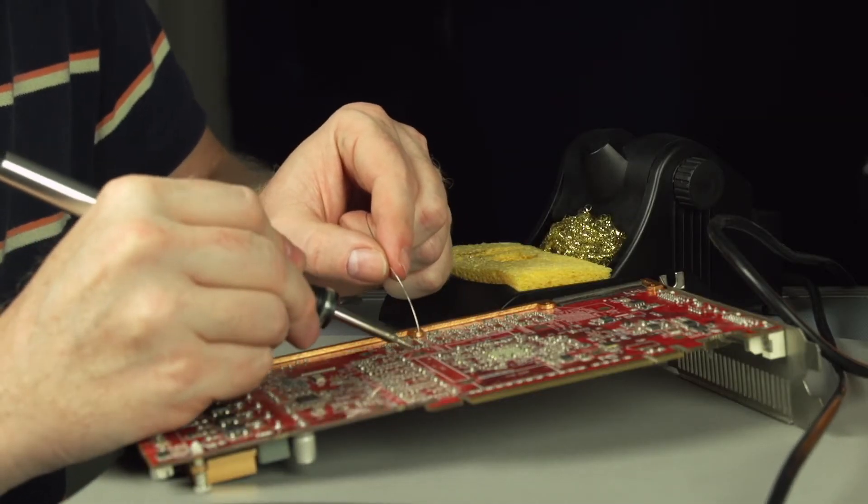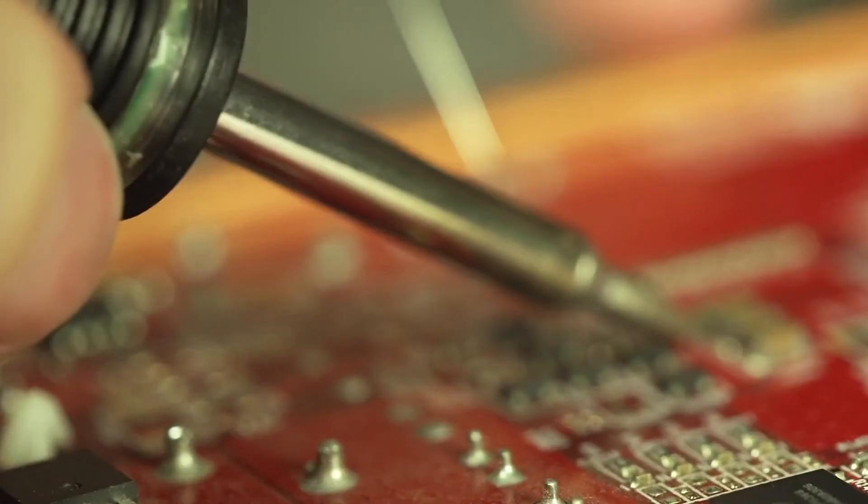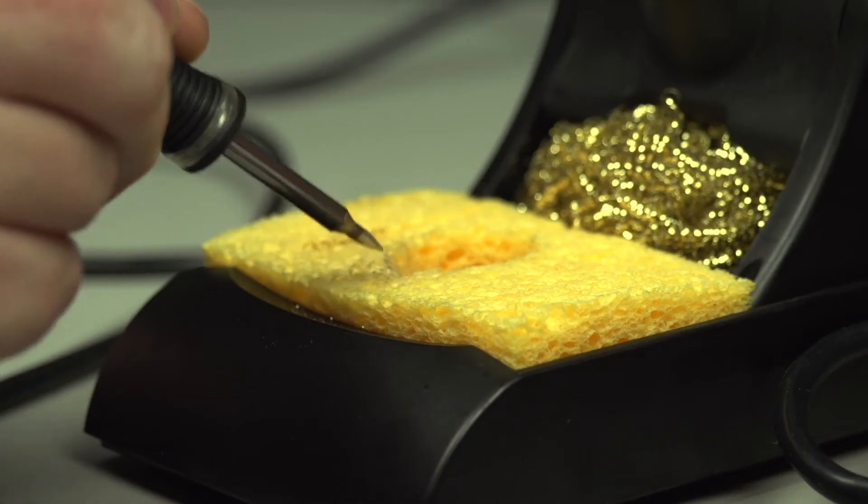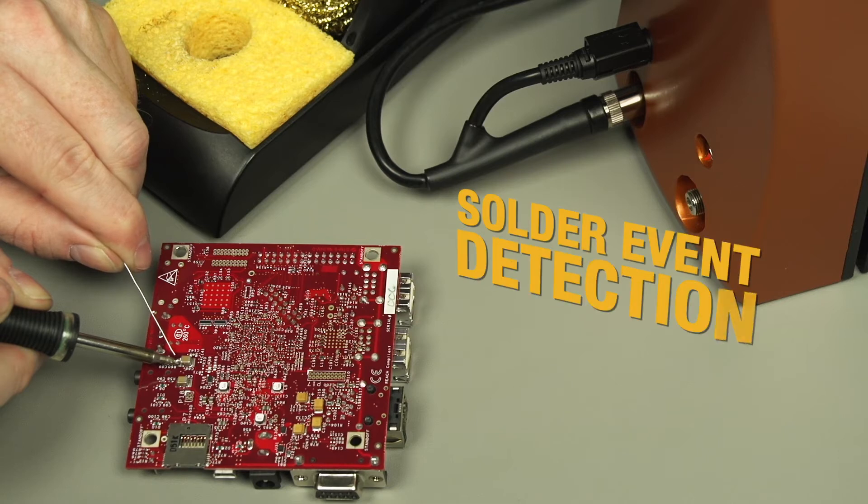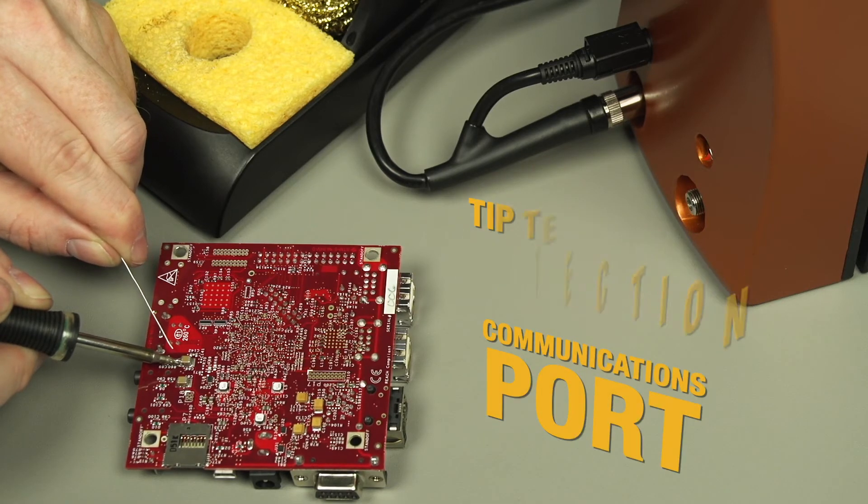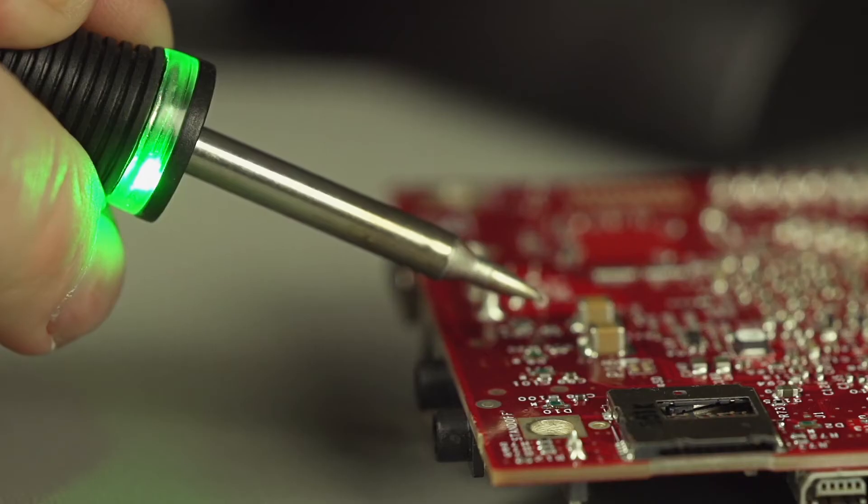Connection Validation provides feedback to the operator via a light ring embedded in the handpiece. Successful intermetallic compound formation triggers a green light, signaling to the operator that the ideal solder joint is created.